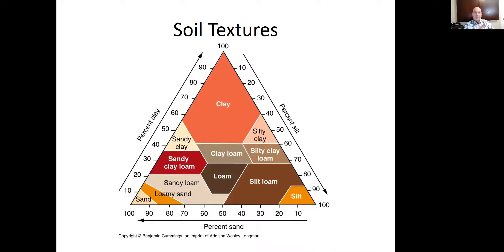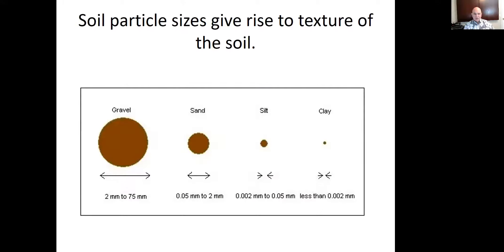One of the things that really impacts how water moves through soils is soil texture, which we're all familiar with. We have all these different soil textural categories. A reminder that soil particle size gives rise to the texture of the soil. Starting with the largest: gravel, which doesn't actually contribute to texture — we don't count rocks. Then sand, which is bigger than silt, which is bigger than clay.